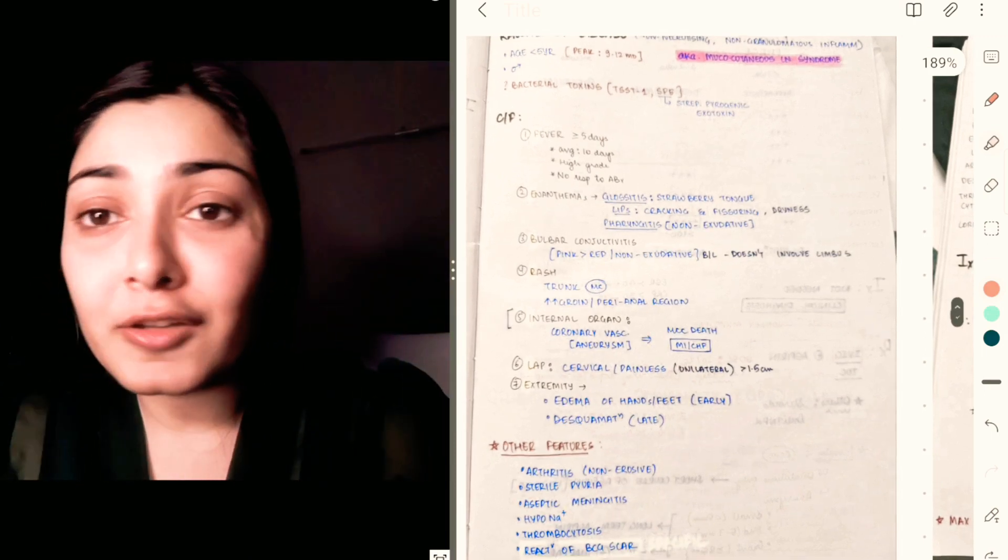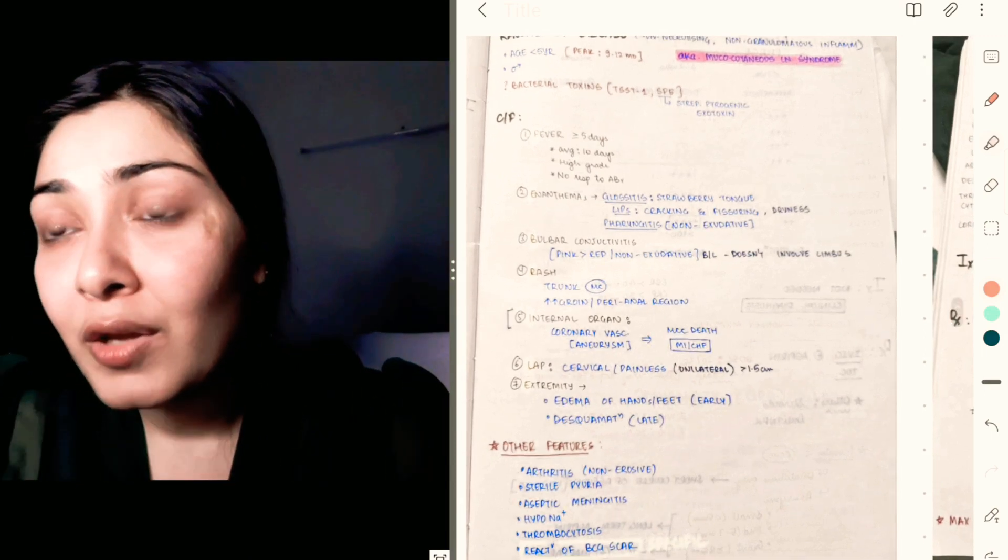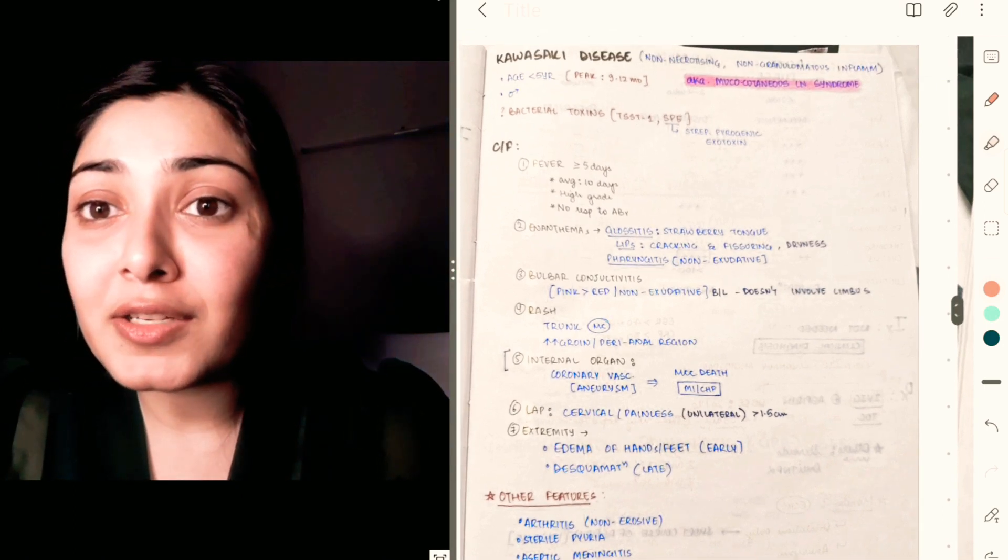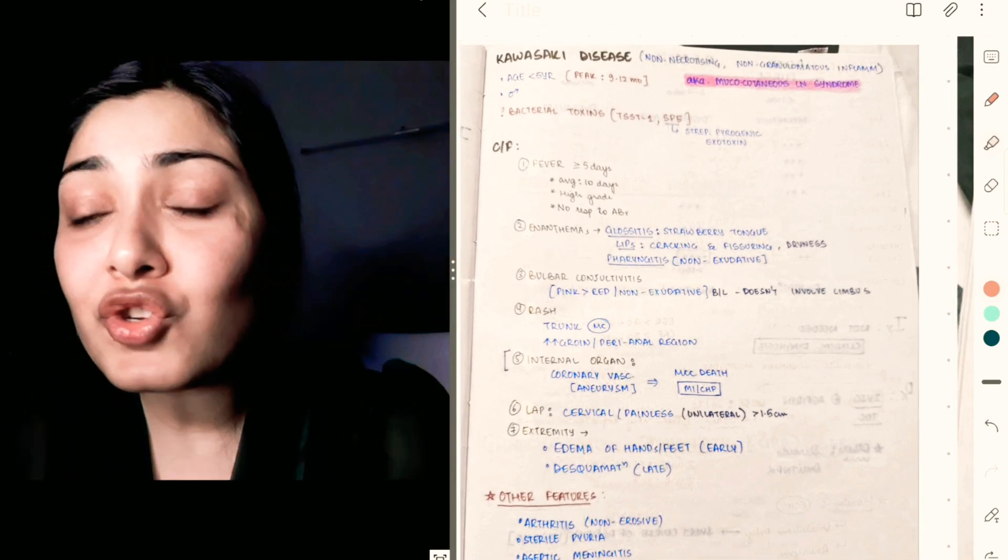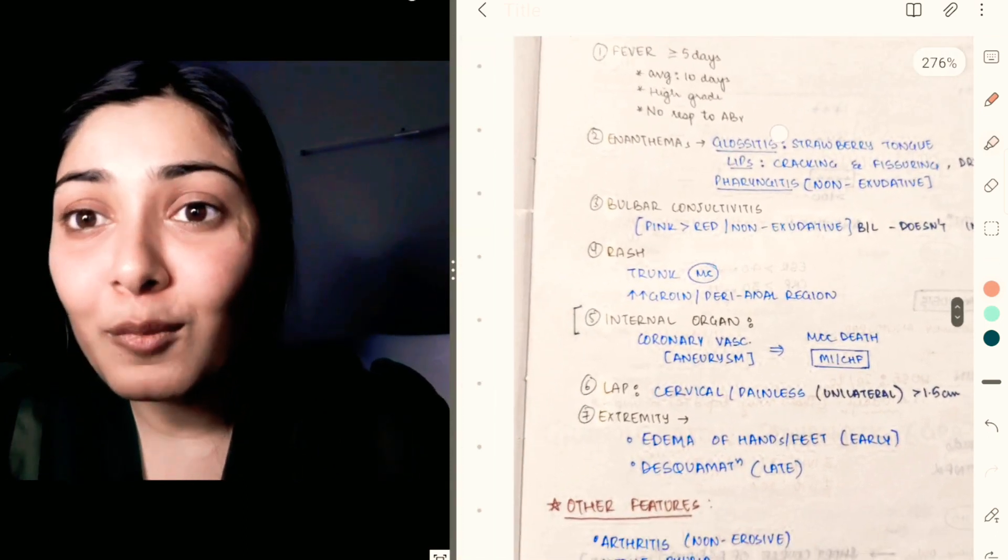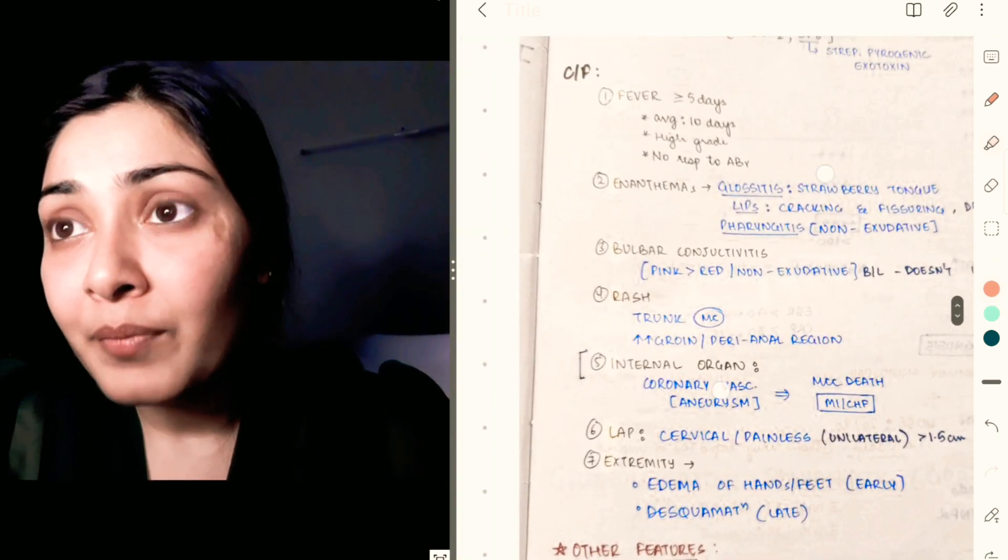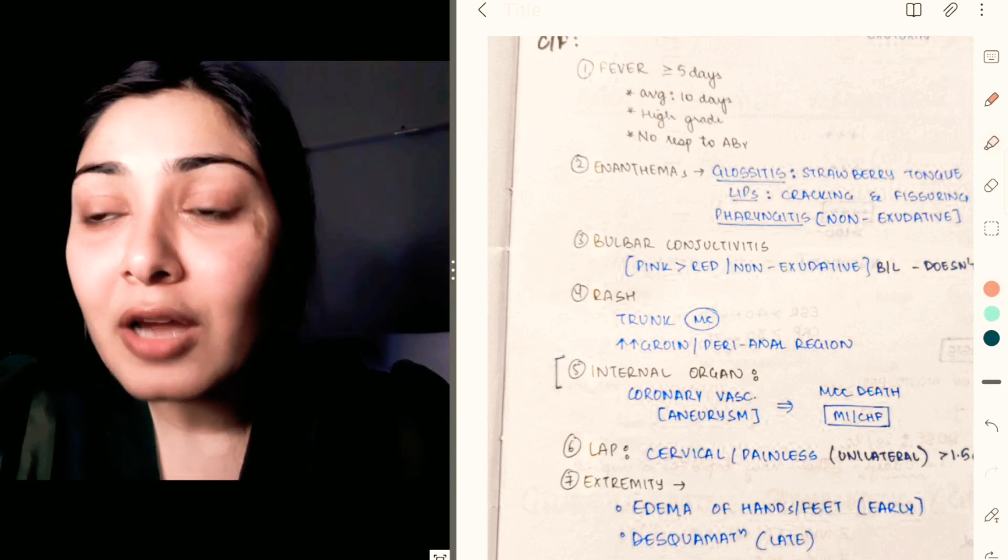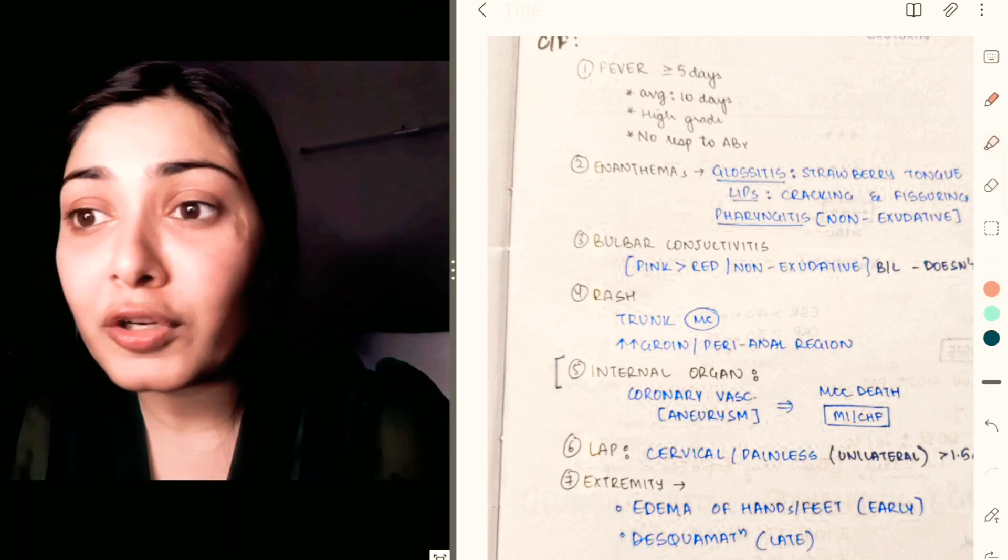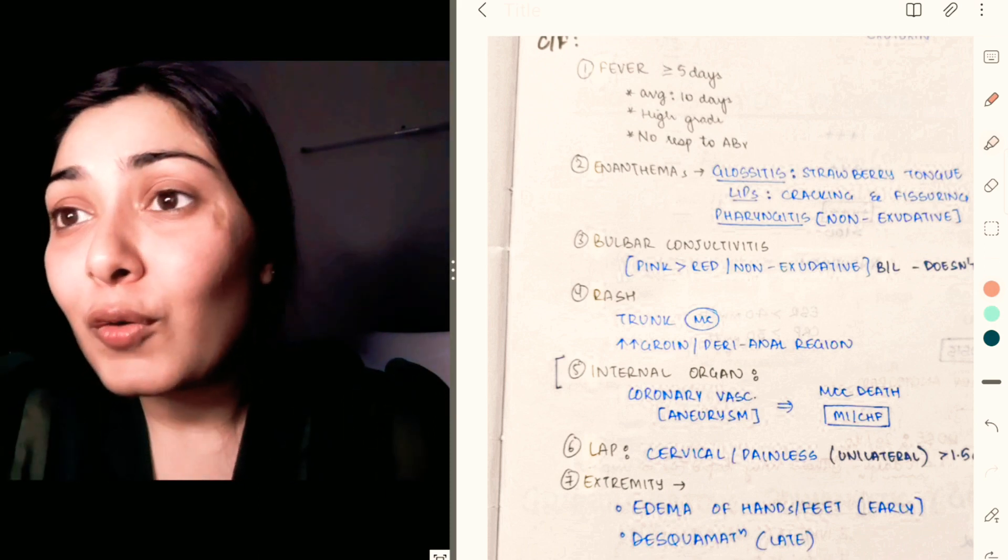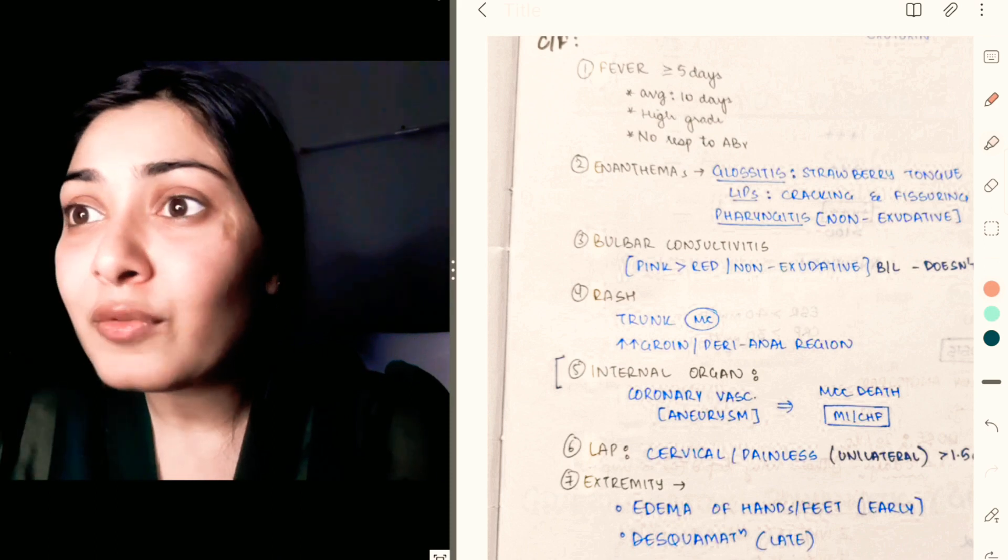I remember Kawasaki disease—medium vessel vasculitis seen in children less than 5 years of age. There's a mnemonic for its clinical features and diagnostic criteria. That mnemonic I made was FEBRILE: F for fever, E for enanthems, B for bulbar conjunctivitis, R for rash, I for internal organ involvement, L for lymphadenopathy, and E for extremity changes.